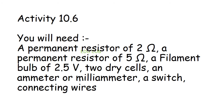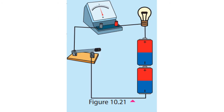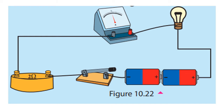First, connect the bulb, switch, ammeter or milliammeter, and dry cells as shown in the figure. Close the switch and record the ammeter reading. Also observe the brightness of the bulb. Then connect an extra fixed resistor of 2 ohms to the circuit. Close the switch, observe the brightness of the bulb, and record the ammeter reading. Open the switch and replace the fixed resistor with a 5 ohm resistor instead of the 2 ohm resistor. Close the switch again, observe the brightness of the bulb, and record the ammeter reading.